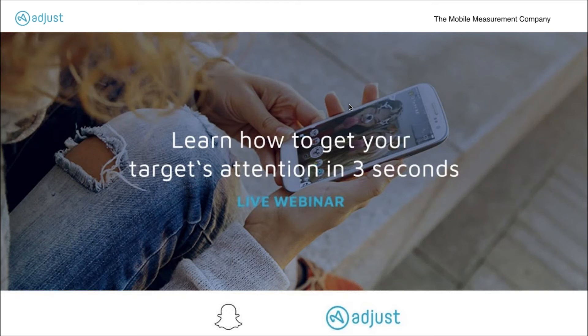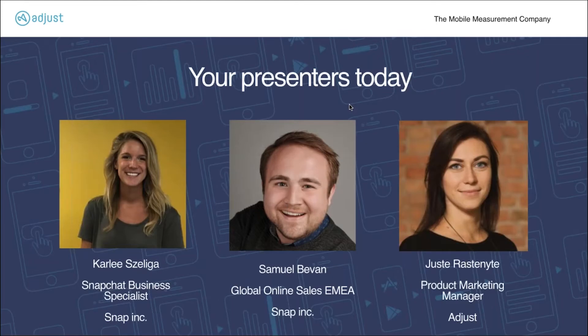The webinar will roughly take 35 to 40 minutes, and as always, we'll have two parts. We'll have the Snapchat part, talking about what ad formats they support — it's somewhat of a new platform for many advertisers, so it will be super interesting to learn what formats they have, how they perform, and some tips and tricks. And on the Adjust side, we'll highlight how to attribute the installs from those campaigns and leverage the integration we have with the two platforms.